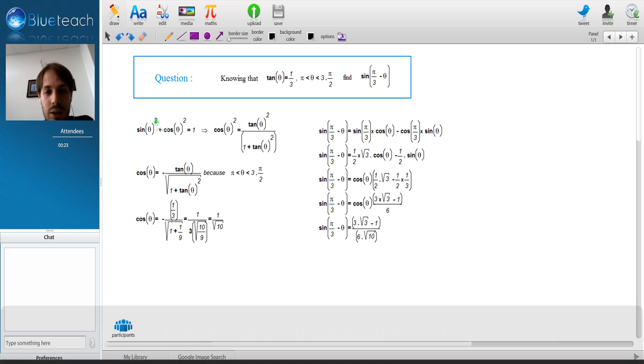Knowing that tangent theta equals one-third, and that theta is between pi and 3 pi divided by 2, we need to find sine pi divided by 3 minus theta.